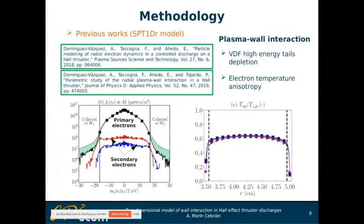Previous studies already show how the velocity distribution function is non-Maxwellian when analyzing these plasma wall interaction problems. Secondary electrons coming out of the walls have totally different dynamics and also affect the velocity distribution function shape. As a consequence, there is an electron temperature anisotropy, meaning the radial temperature for electrons is totally different from the perpendicular temperature.